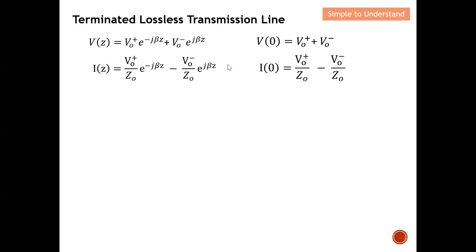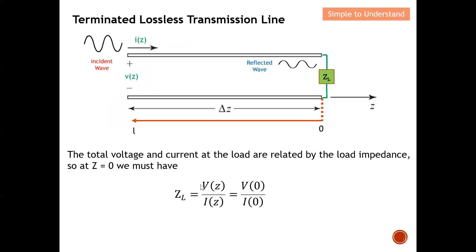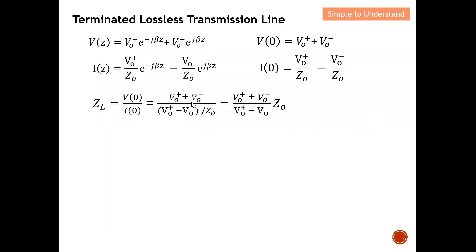All the exponential parts become one, so for the voltage equation the terms simplify, and for the current equation the term becomes V-naught-plus over Z0. Recalling that ZL equals V-naught over I-naught as illustrated earlier, I can combine these two equations. V-naught-plus goes over this term and I-naught over this term, giving a combined equation that I can now simplify.